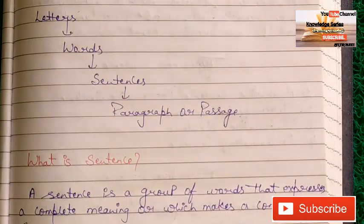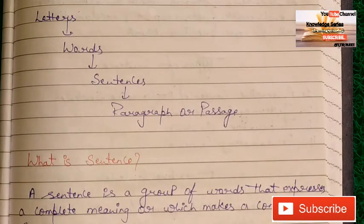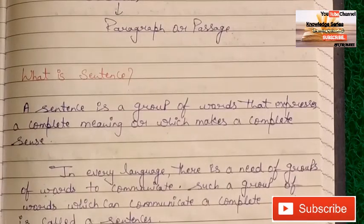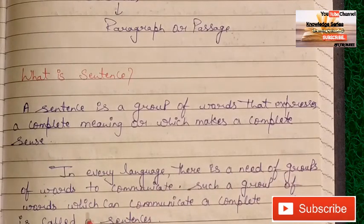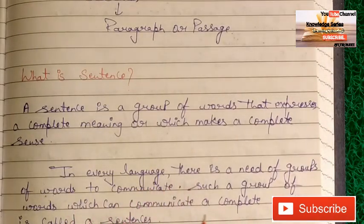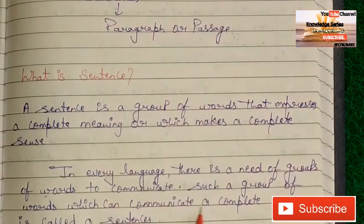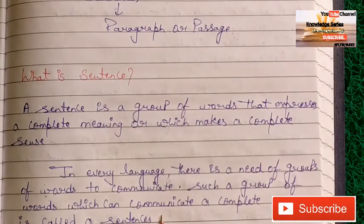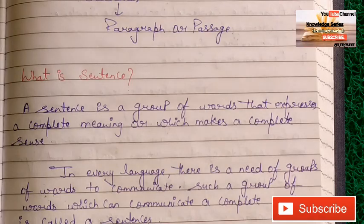A sentence is a group of words — 'waakye shabdo ka ek aisa samuh hai jo ek poorn arth ko vyakt karta hai aur jo ek poorn arth deta hai.' Or we can say that in every language there is a need for groups of words to communicate. Such a group of words which can communicate a complete message is called a sentence — 'aise shabdon ke samuh se baatcheet karne ke liye jo ek poorn arth ko vyakt karta hai, use vakya kahte hain.'